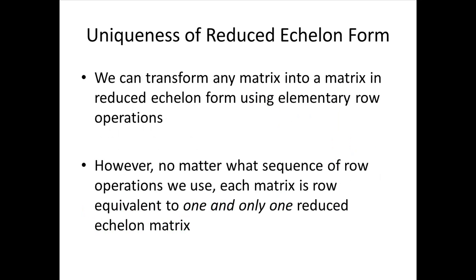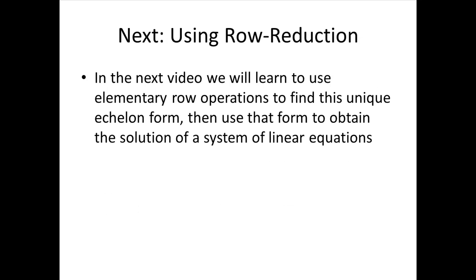We can transform any matrix into reduced echelon form using elementary row operations. No matter what sequence of row operations we use, each matrix is row equivalent to only one reduced echelon matrix — so we'll always end up at the same unique reduced echelon form. In the next video, we'll use elementary row operations to find that unique echelon form, and then use it to solve a system of linear equations. Click the link below to get that video.